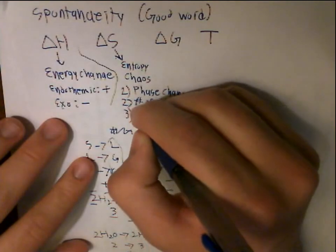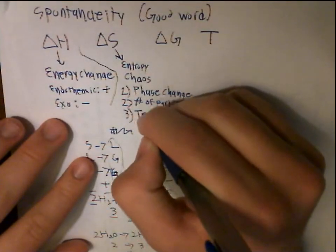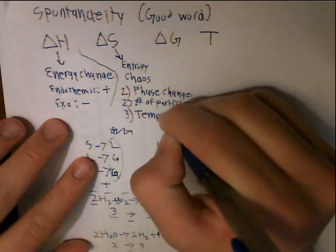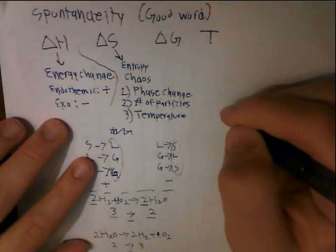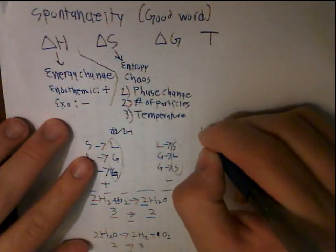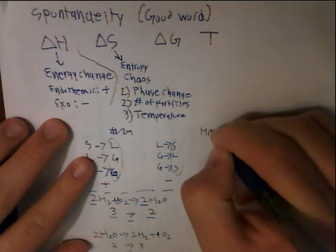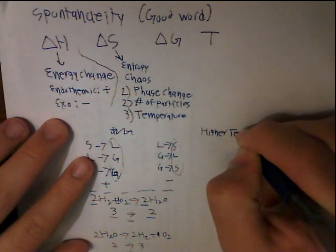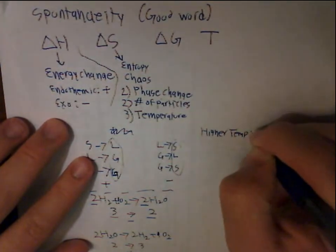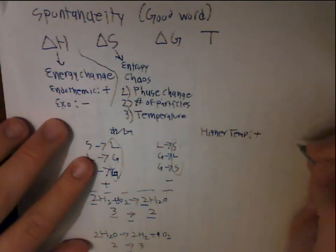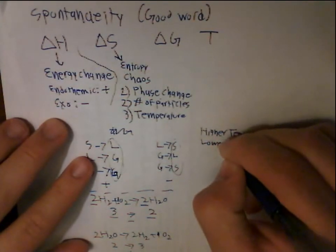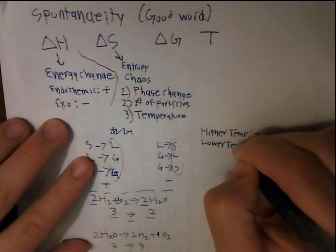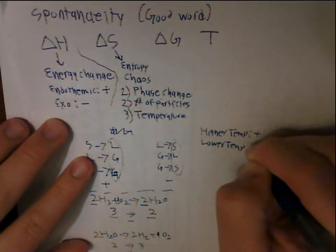The third way is just temperature. Higher temperature means more chaos because there's more kinetic energy, so delta S is positive. Lower temperature means negative delta S.